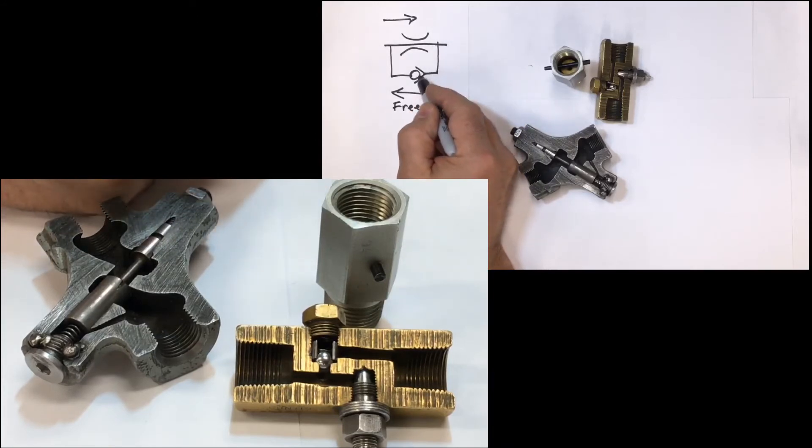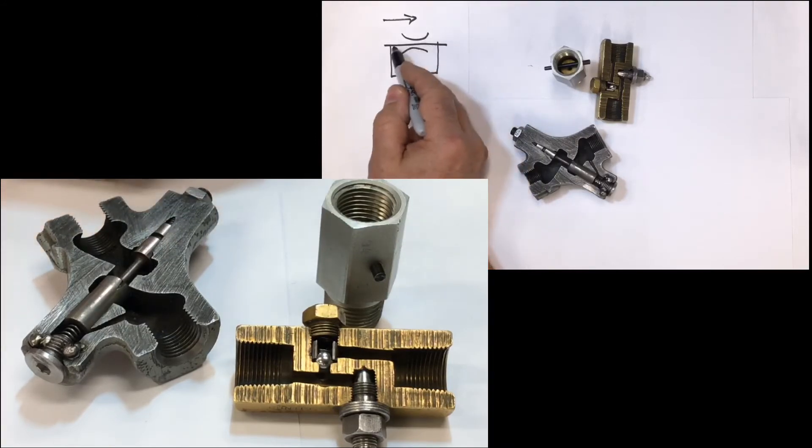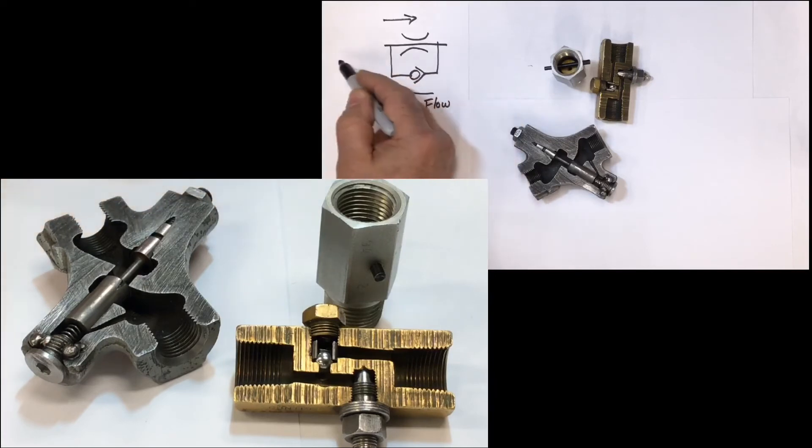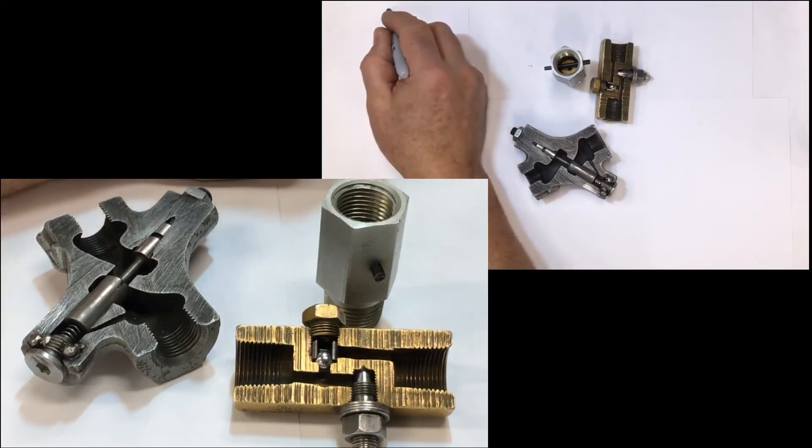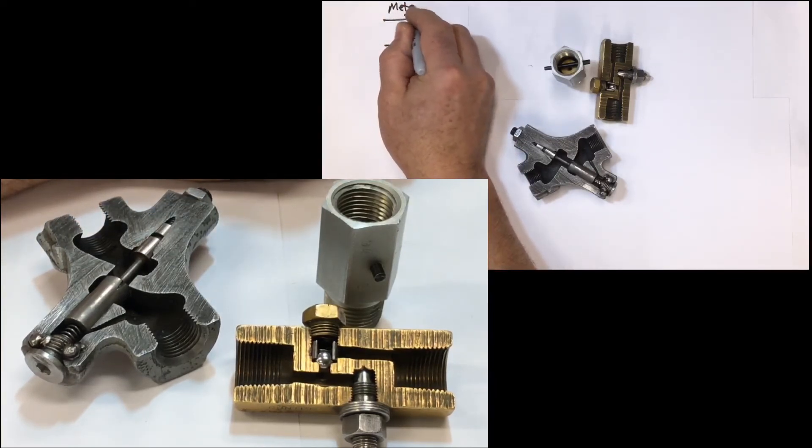Because as the oil comes in this way, it can unseat the check and flow through the orifice, so you have free flow in that direction, metered in this direction.